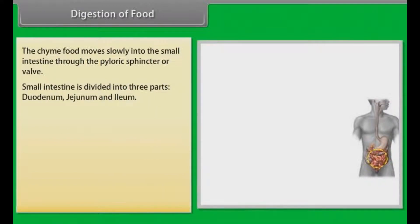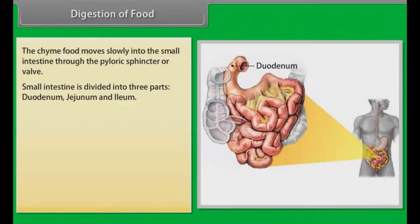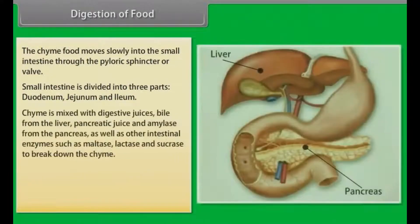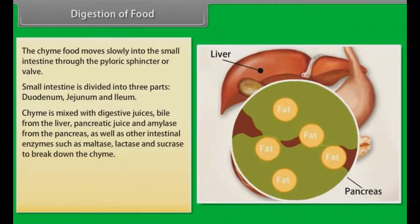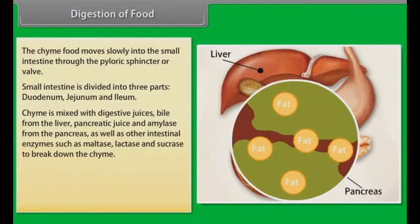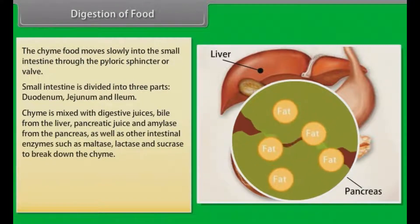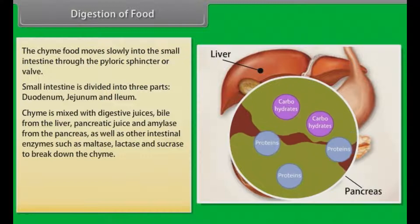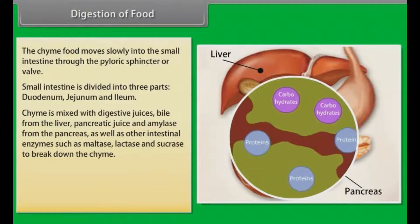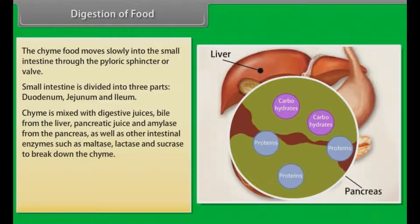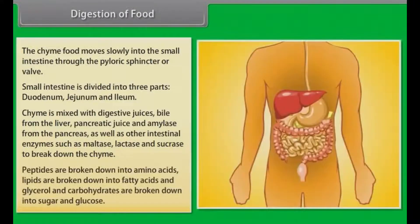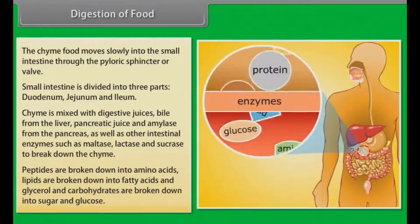The small intestine is divided into three parts: duodenum, jejunum and ileum. The chyme is mixed with digestive juices — bile from the liver, pancreatic juice and amylase from the pancreas, as well as other intestinal enzymes such as maltase, lactase and sucrase to break down the chyme. Peptides are broken down into amino acids, lipids are broken down into fatty acids and glycerol, and carbohydrates are broken down into sugars and glucose.